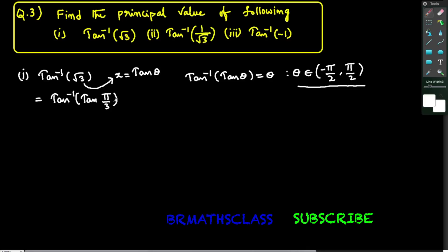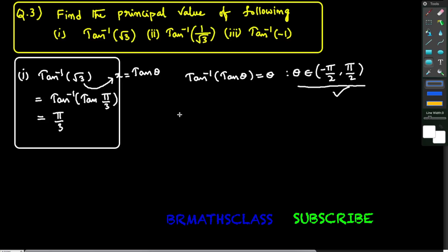From the trigonometry table, tan 60 degrees, that is tan(π/3), equals root 3. Observe that π/3 (i.e., 60 degrees) lies between −90 and +90, so the formula tan inverse of tan θ = θ works here. Therefore, tan inverse of tan(π/3) = π/3, and the principal value of tan inverse of root 3 is π/3.